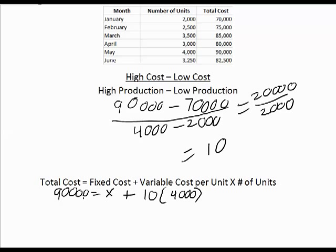So we would have 90,000 equals x plus 40,000, subtract 40,000 from both sides and our x or our fixed cost is equal to $50,000.